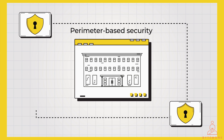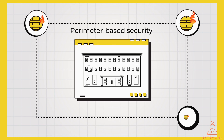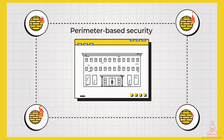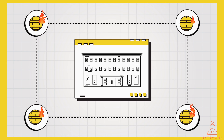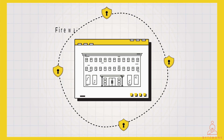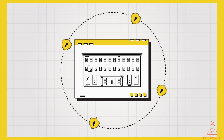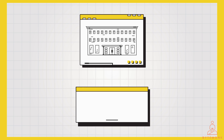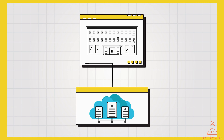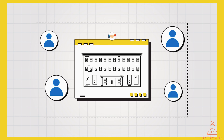For many years, the perimeter-based security model was the standard approach to cybersecurity for all organizations. It is based on the idea of creating a strong perimeter around an organization's network and protecting everything inside it, typically done using firewalls and other security technologies. The perimeter-based model was effective for many years because it was relatively simple to implement and manage. However, those same solutions are no longer sufficient as companies move to the cloud — one of the biggest challenges being that it assumes everything inside the perimeter is trusted.